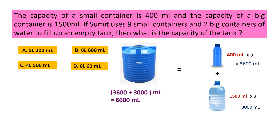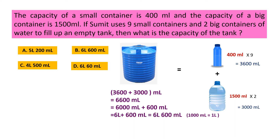6600 milliliter can be written as 6000 milliliter plus 600 milliliter, which can be written as 6 liter plus 600 milliliter, because 1000 milliliter is equal to 1 liter, so 6000 milliliter would be 6 liter. So the answer is 6 liter 600 milliliter, and the correct option is B.